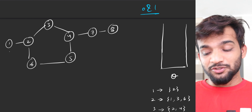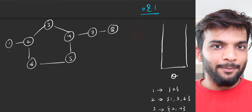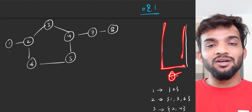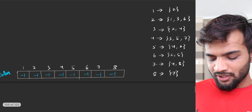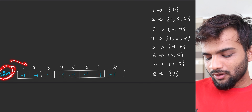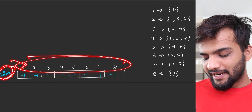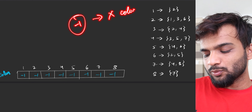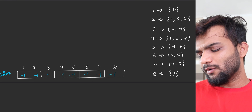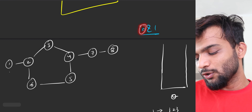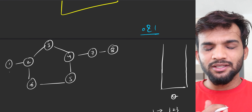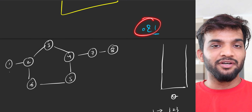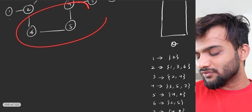We are going to check for bipartiteness using the BFS algorithm. BFS requires a queue data structure. Instead of a visited array, we will use a color array where all nodes start at minus one, meaning not colored yet. We will color nodes with color zero or color one — these are our two colors.